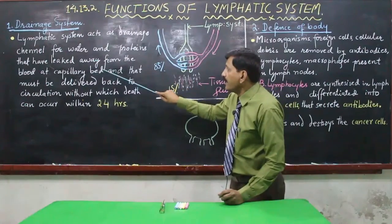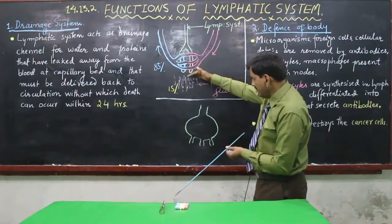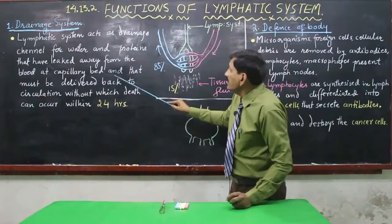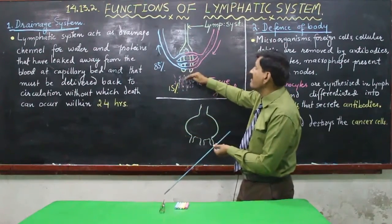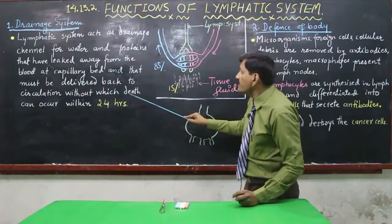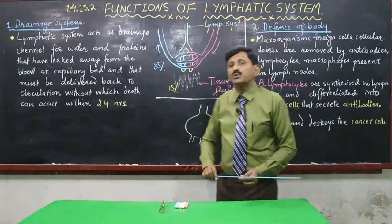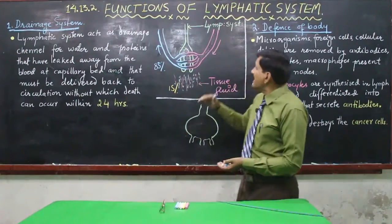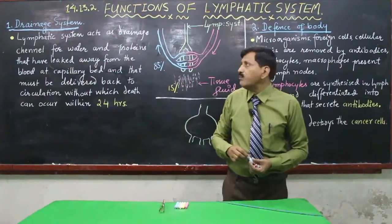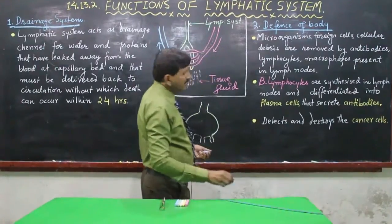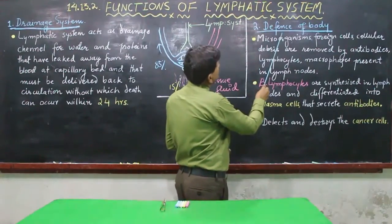The lymphatic system acts as a drainage channel for water and proteins that have leaked away from the blood capillary bed. This fluid must be delivered back to the circulation, otherwise death can occur within 24 hours. So the lymphatic system returns this 15% of tissue fluid to the circulatory system, functioning as a drainage system.